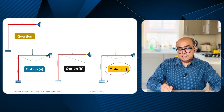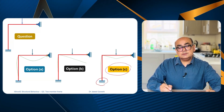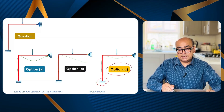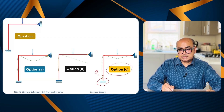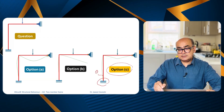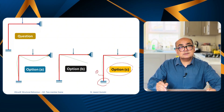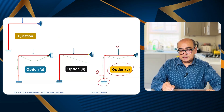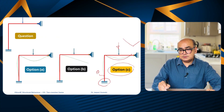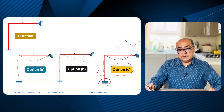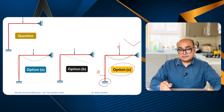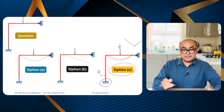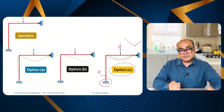In option C, the support at this point is a fixed support. A fixed support cannot rotate, but here you can see a rotation angle — that means this option is wrong. Also, when you apply vertical loading it should deflect in a curve, not as two straight lines. So we eliminate option C.